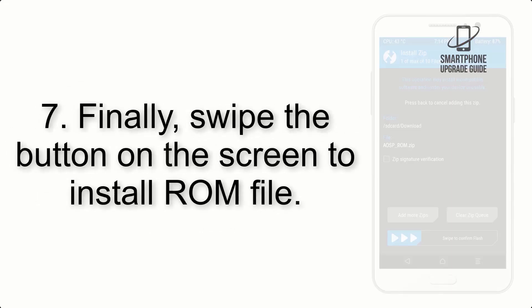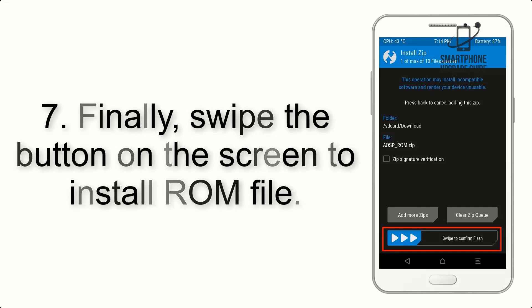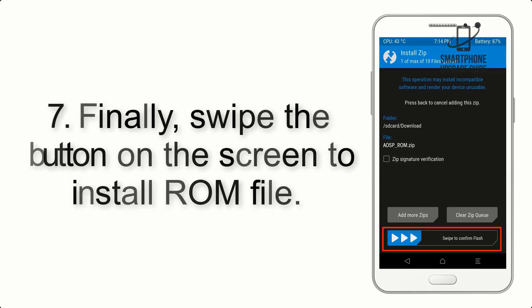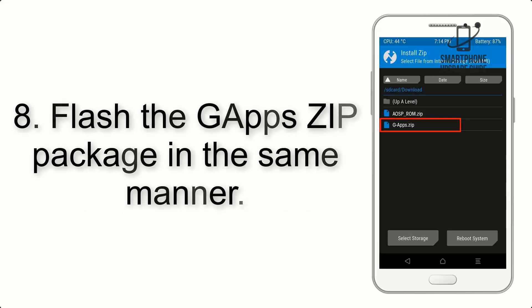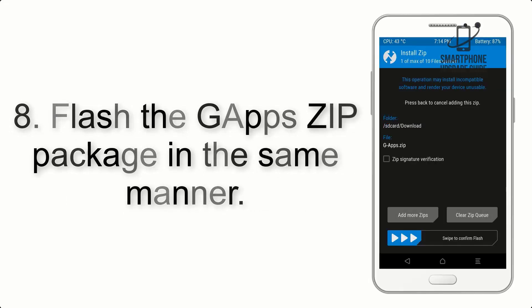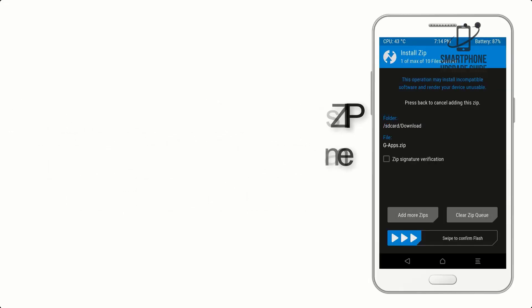Step 7: Finally, swipe the button on the screen to install the ROM file. Step 8: Flash the GApps ZIP package in the same manner.